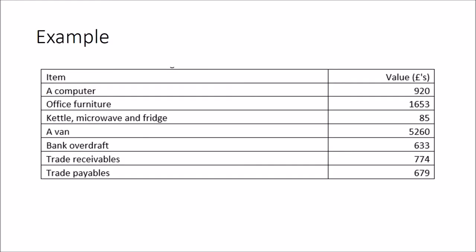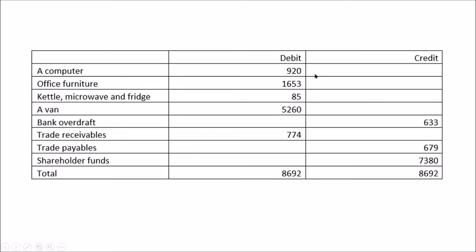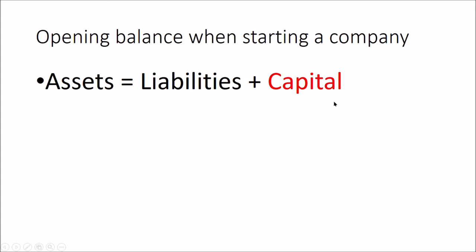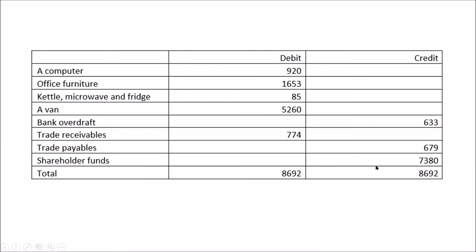So we have the accounting equation. Let's say Mary Jones opened up her own business and brought the following assets in to start trading. She's got those assets with their debits and credits. Notice the question misses off shareholders' funds — it's testing whether you'd miss that out in the exam. Your debits need to equal your credits, and the missing figure is the shareholders' funds, because this person has invested all these assets, less the liabilities, which is their investment put into the business.